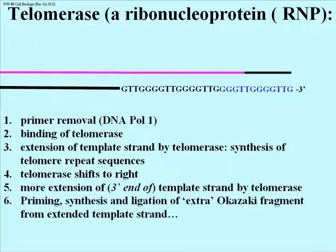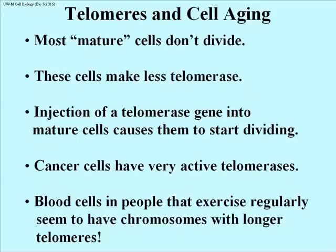A remarkable discovery was made some years ago: cells that have stopped dividing contain less telomerase than cells that are still active. But if you inject telomerase particles — ribonucleoprotein particles isolated from healthy cells — into cells that have stopped dividing, the cells start dividing again. Cancer cells, in contrast, have active telomerases that don't quit. And in a more recent study, the cells of people who exercise regularly have chromosomes with longer telomeres, implying the presence of more active telomerases, and suggesting that you will live longer — at least your cells will live longer — if you exercise.